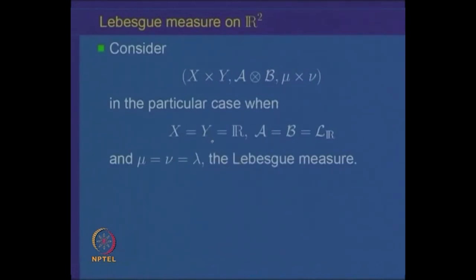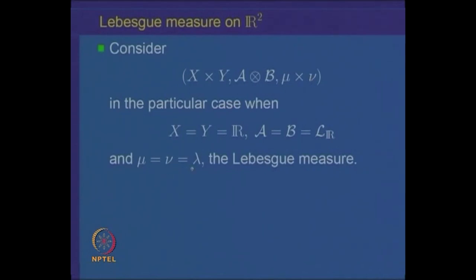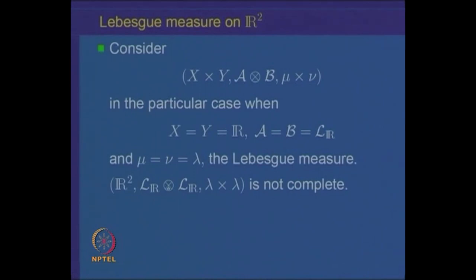Let us recall. We had defined the product measure space. Given measure spaces (X, A, μ) and (Y, B, ν), we defined the product sigma algebra A×B on the product space X×Y and the product measure μ×ν. Today we will look at the particular case when X = Y = the real line, the sigma algebra A = B = the sigma algebra of Lebesgue measurable sets, and μ = ν = the Lebesgue measure. Taking the product of the real line with itself gives rise to the product measure space R², with sigma algebra being Lebesgue measurable sets times Lebesgue measurable sets, and the product measure λ×λ.